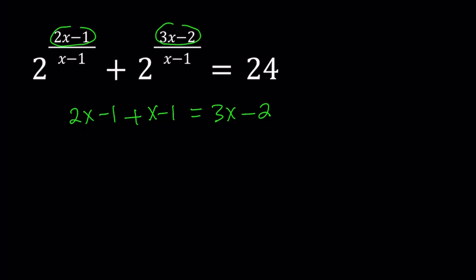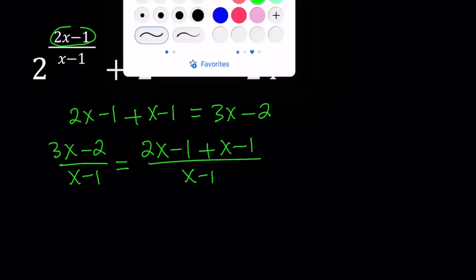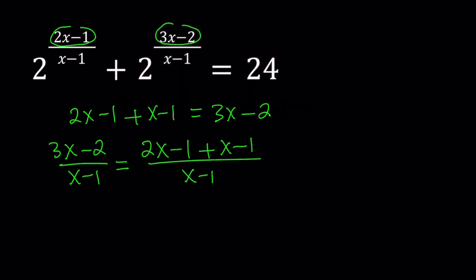Let's go ahead and write the second fraction in terms of the first one. So we're going to write this as 2x minus 1 plus x minus 1 all over x minus 1. And now notice that here we can separate these two, like the sum into two fractions.